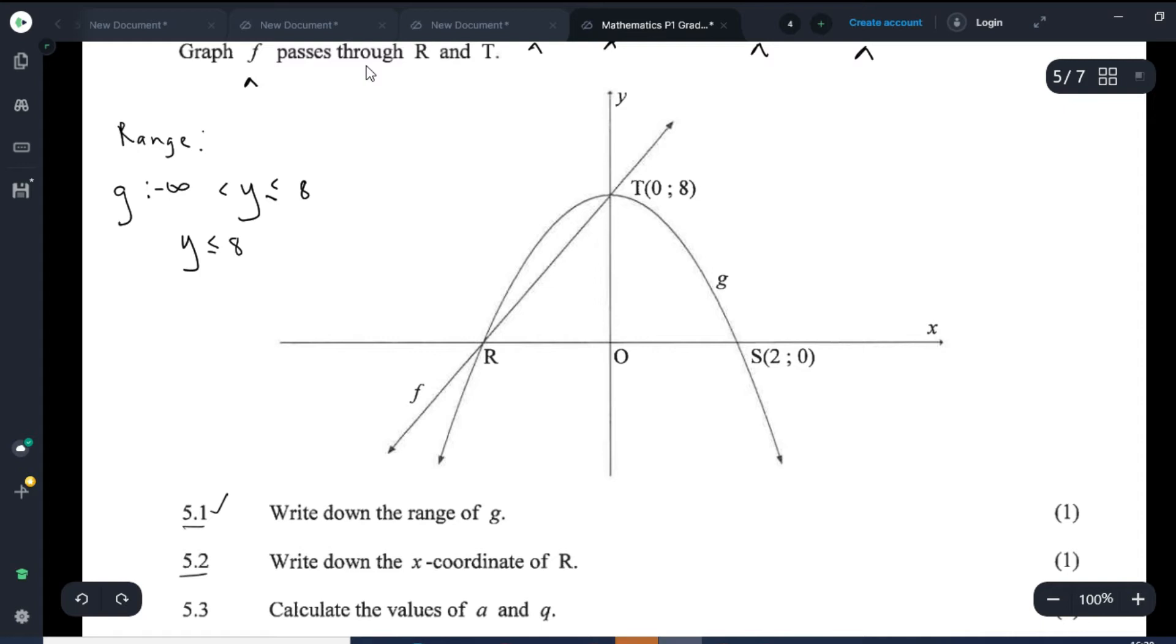So 5.1 was pretty straightforward. Let's go to 5.2. Write down the x coordinate of r. So that's a root. But by inspection, we can see that the distance from the origin to S and the distance from O to R is exactly the same.